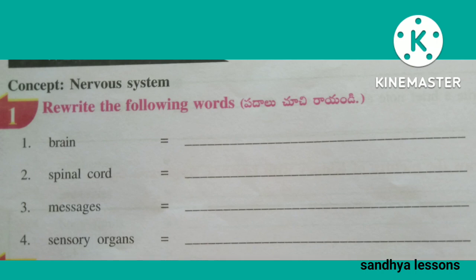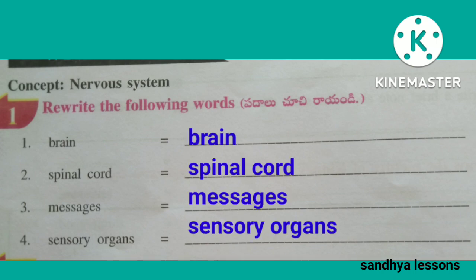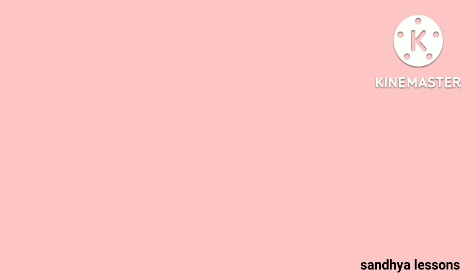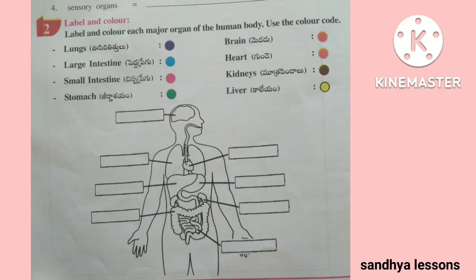First, rewrite the following words: brain, spinal cord, messages, sensory organs. Second, label and color each major organ of the human body using the color code.